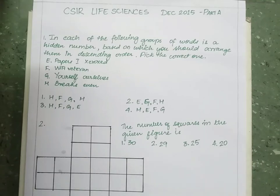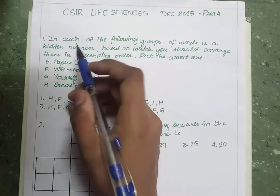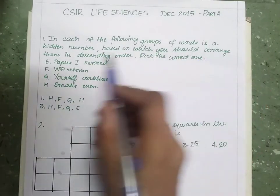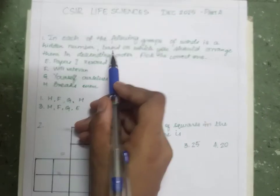Hello everyone, welcome to the Third Benches YouTube channel. Today we will discuss CSAR Life Sciences December 2015 paper, questions 1 to 6. The first question: in each of the following groups of words there is a hidden number, based on which you should arrange them in descending order.